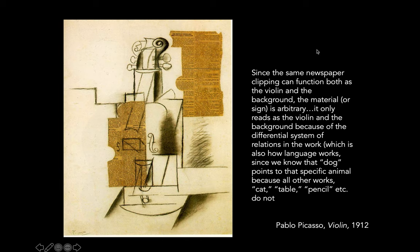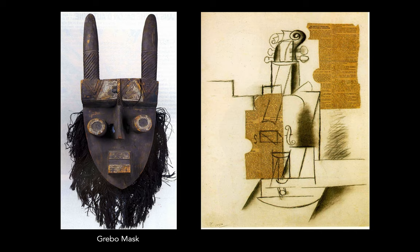So there's a way in which, already, the insights that we're saying are so great about these papiers collés — that they're showing you how language works, that they're within a symbolic mode of representation — it's something African art already knew. They already knew that you could use arbitrary shapes in order to convey the world in some ways.